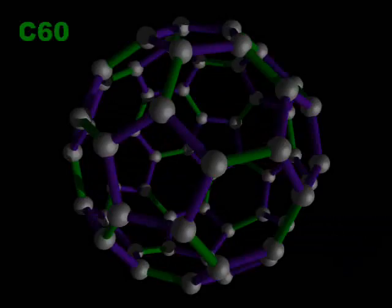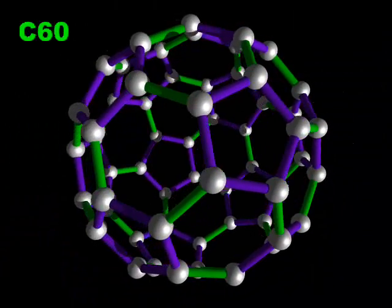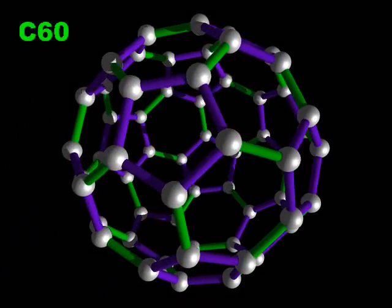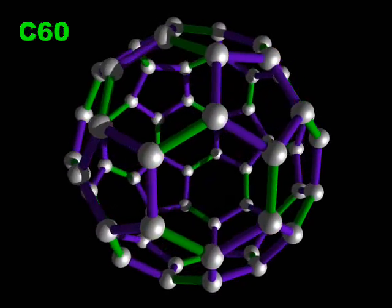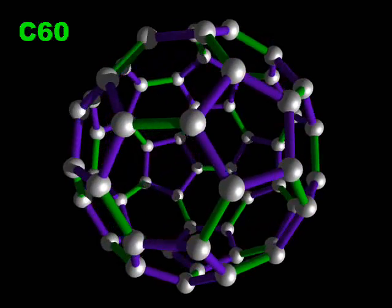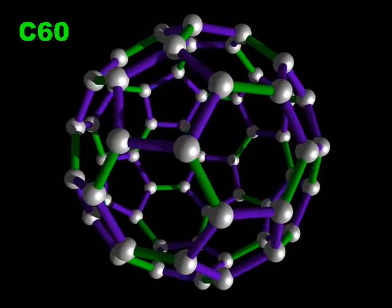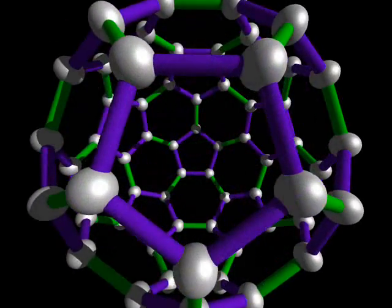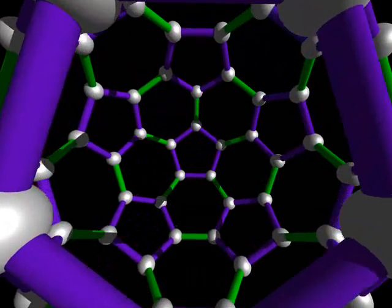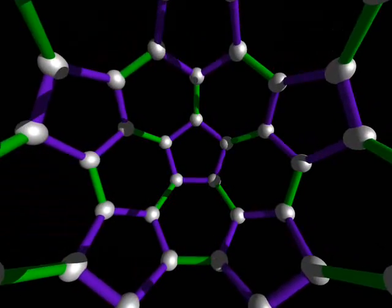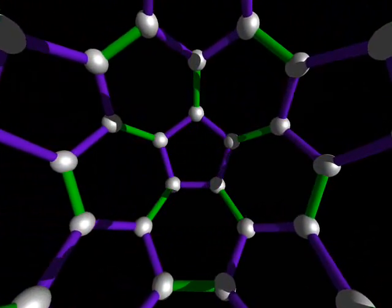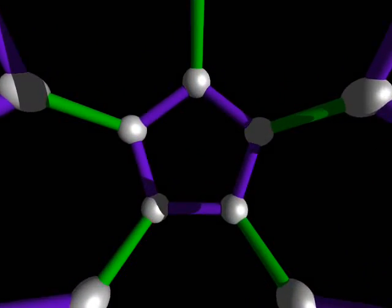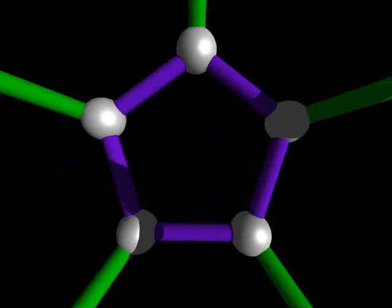The fullerenes consist of carbon atoms arranged into spherical molecules. Like graphite, each carbon atom is connected to only three others. However, the fullerenes contain five-membered as well as six-membered rings. The most common fullerene is C60, also known as a buckyball. This molecule contains 12 five-membered rings and 20 six-membered rings, arranged in a sphere resembling a soccer ball.